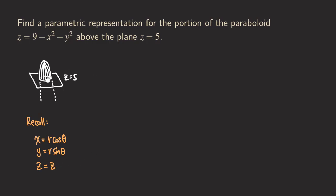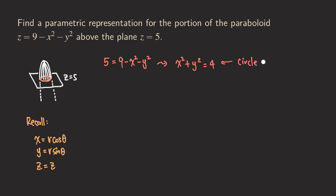First we need to find the curve of intersection between the paraboloid and the plane. We set z equal to 5 in the equation, giving us 5 equals 9 minus x squared minus y squared. Rearranging, we get x squared plus y squared equals 4. This is a circle — the curve of intersection is a circle of radius 2 centered at the origin.